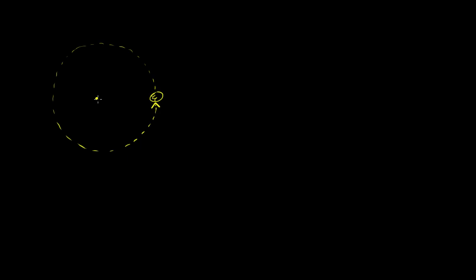Let's say we have some object that's moving in a circular path. This is the center of the circle, and the object is moving in a counterclockwise circular path — we could do clockwise as well. I want to think about how fast it is spinning or orbiting around this center and how that relates to its velocity. Let's say this thing is making five revolutions every second — five revs per second.